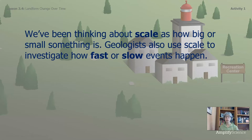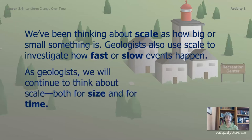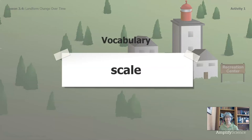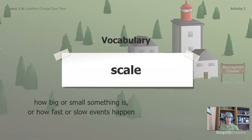We've been thinking about scale as how big or small something is. Geologists also use scale to investigate how fast or slow events happen. As geologists, we will continue to think about scale, both for size and for time. Let's punctuate this vocabulary word — scale: how big or small something is, or how fast or slow events happen.